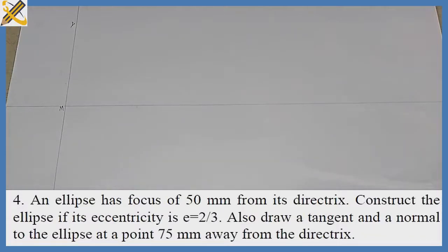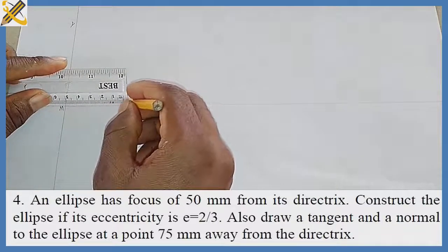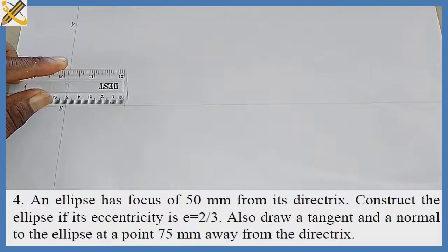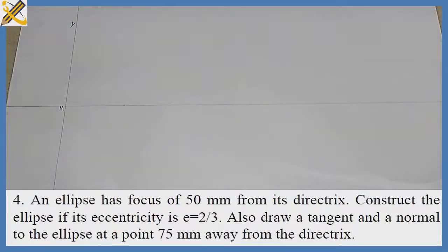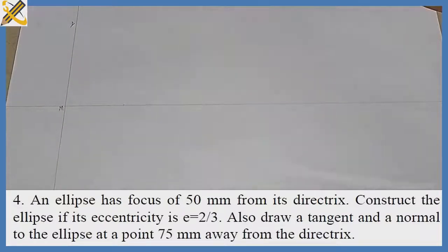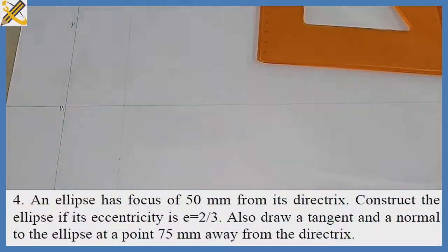We are told that the focal point — the focus of our ellipse from this directrice — is 50mm. So with my ruler from point M right here I'm measuring 50 millimeters. Having the mark of 50 millimeters, I'm going to draw it vertically — a perpendicular line of 50 millimeters.